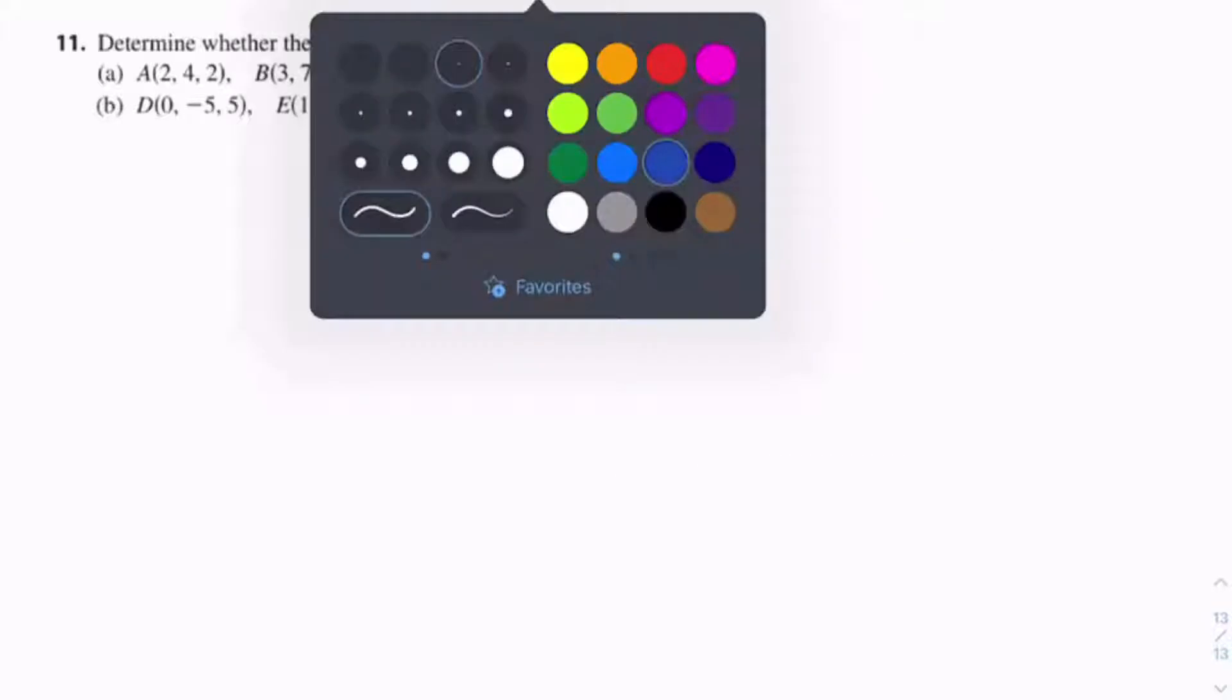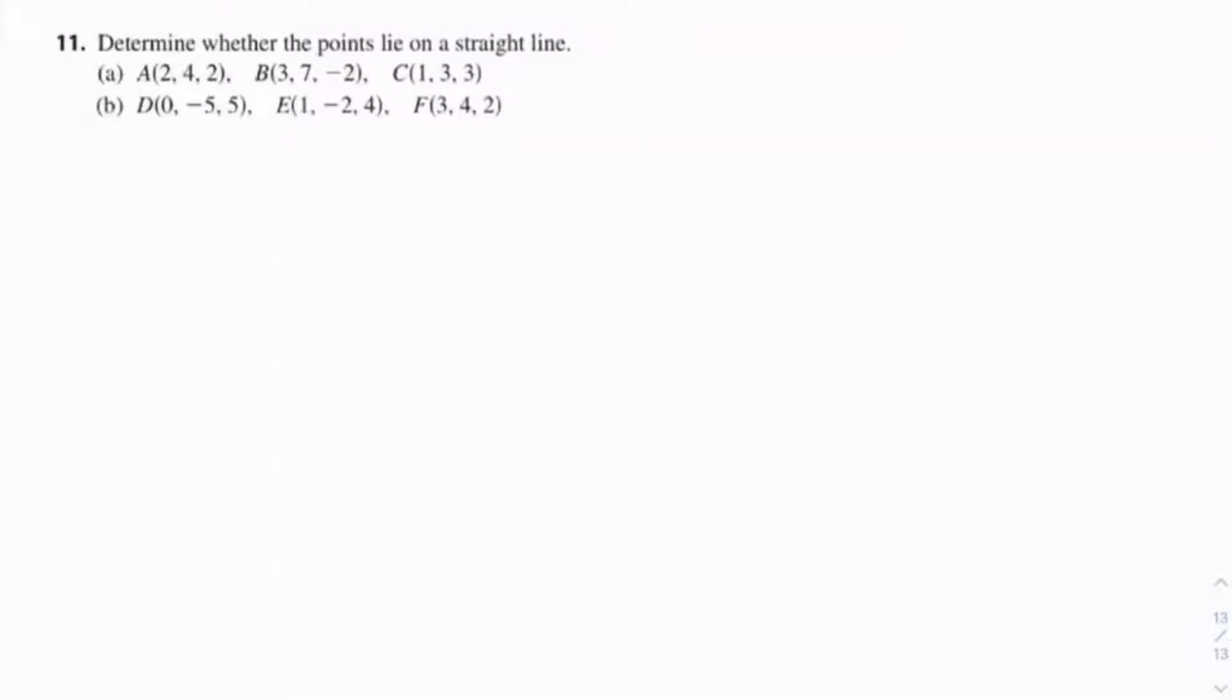So let's find AB and BC. So this equals 3 minus 2, 7 minus 4, negative 2 minus 2, which equals the segment 1, 3, negative 4.